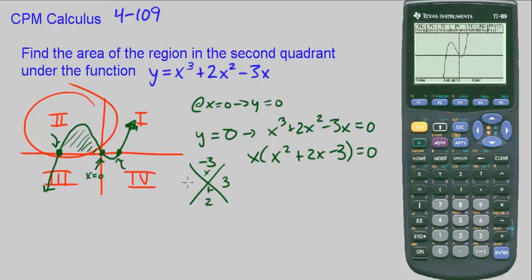Well, 3 times negative 1 multiply to get negative 3, add to get 2. So this is going to be x times x minus 1 times x plus 3 when we factor.